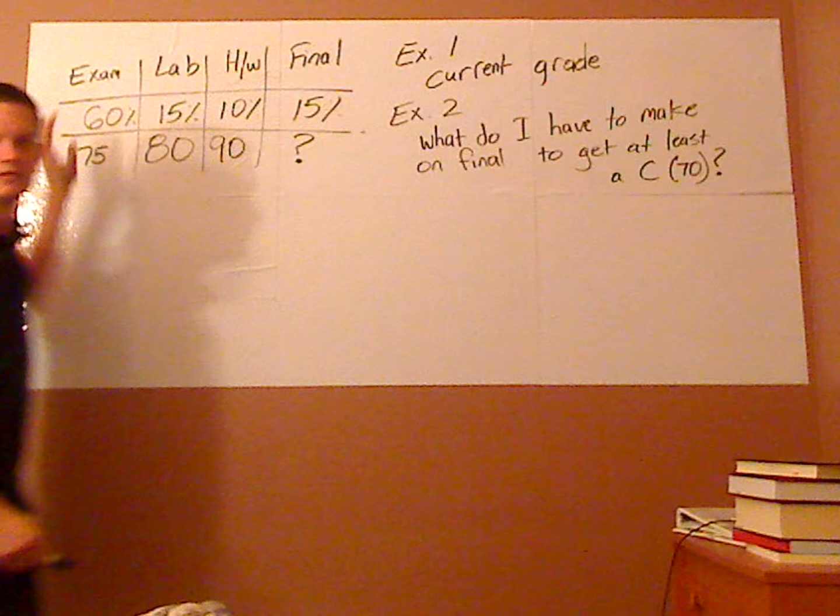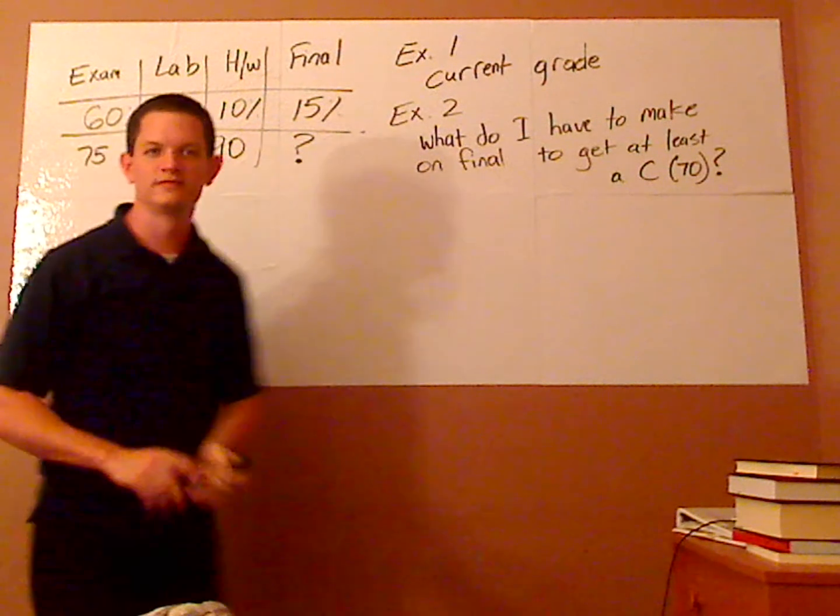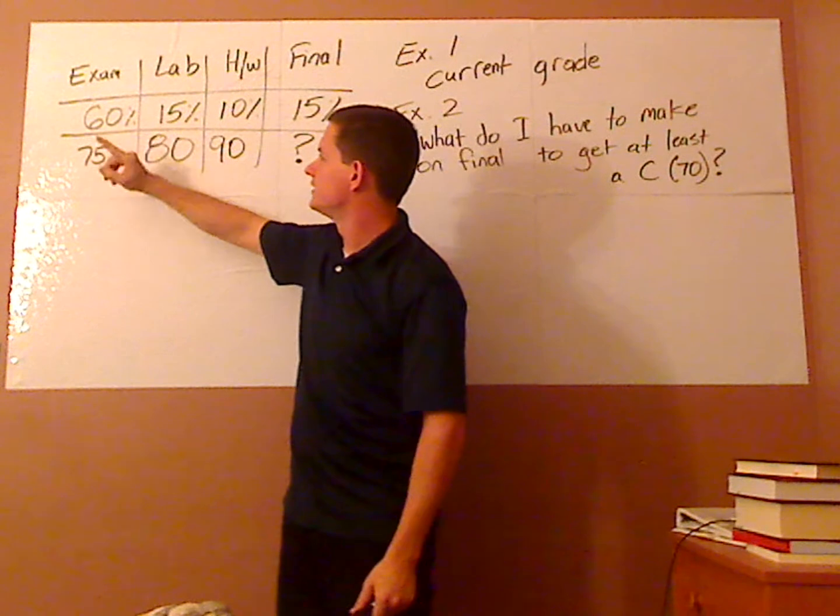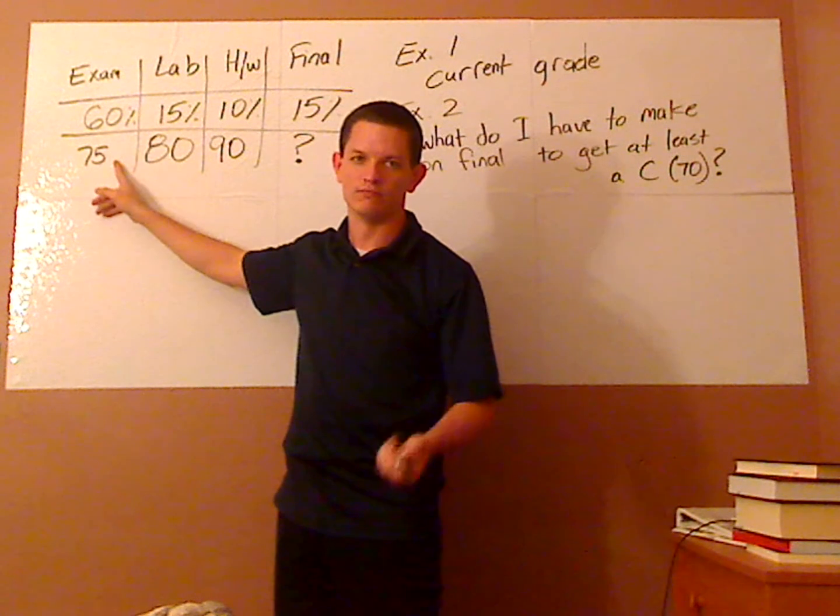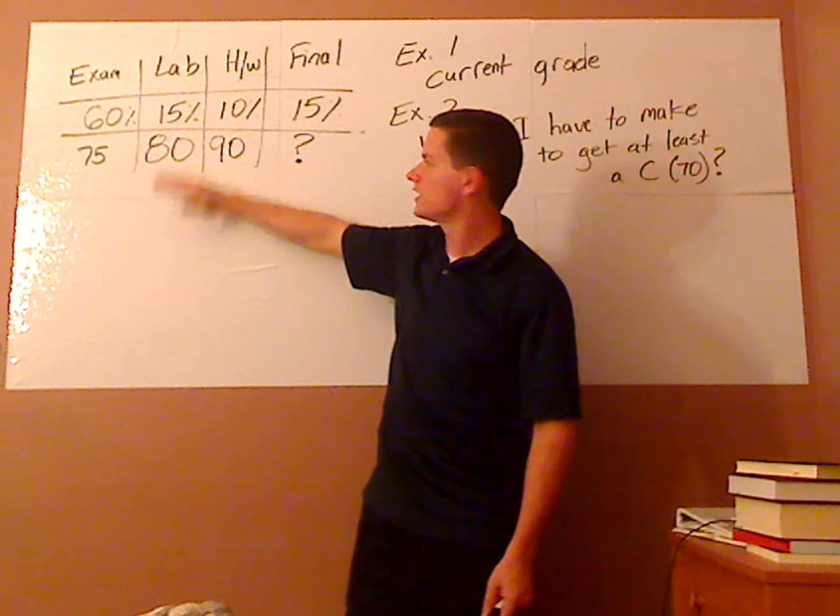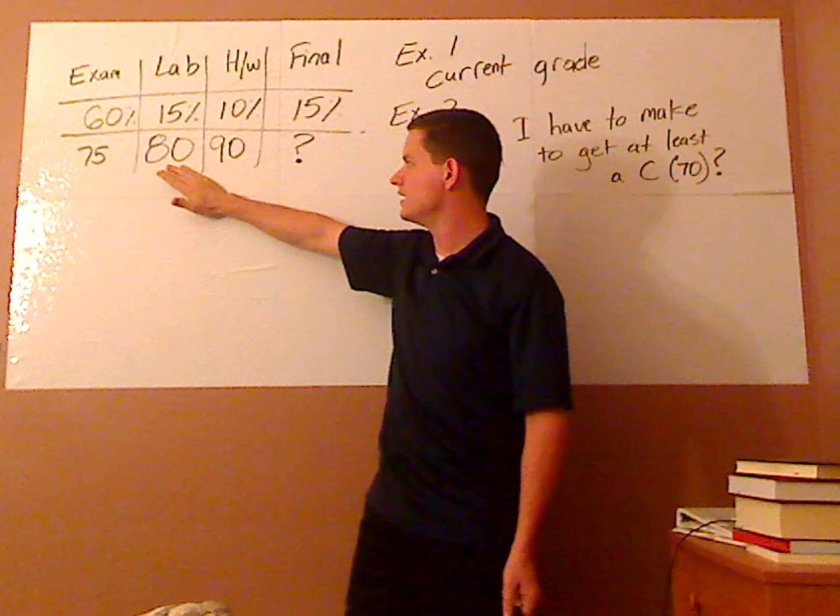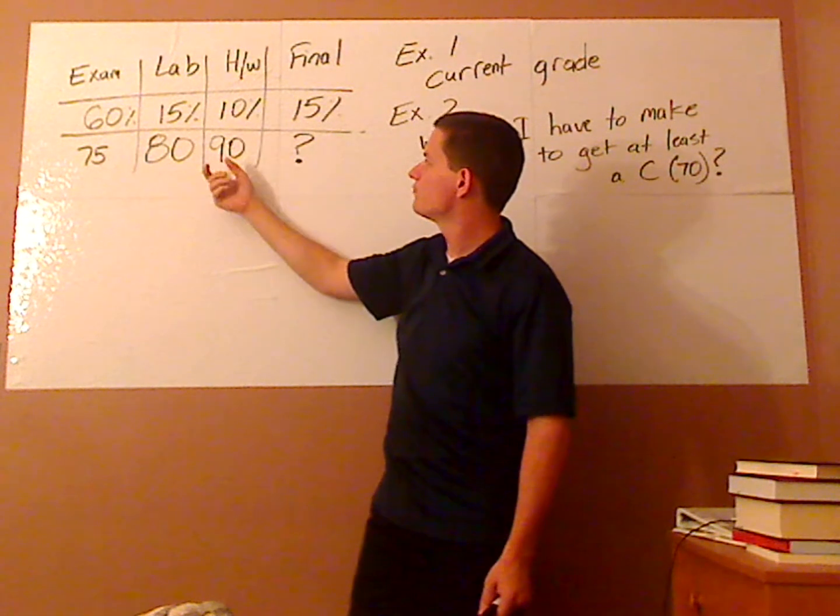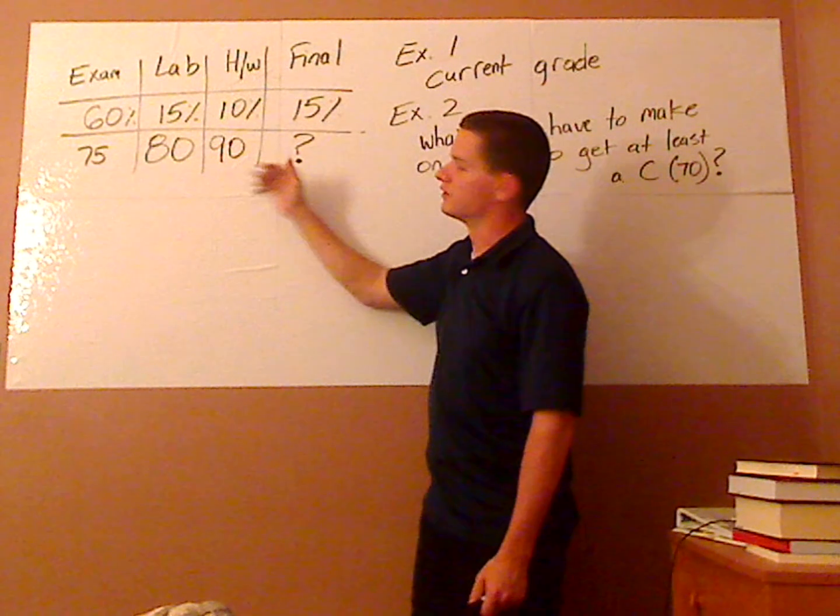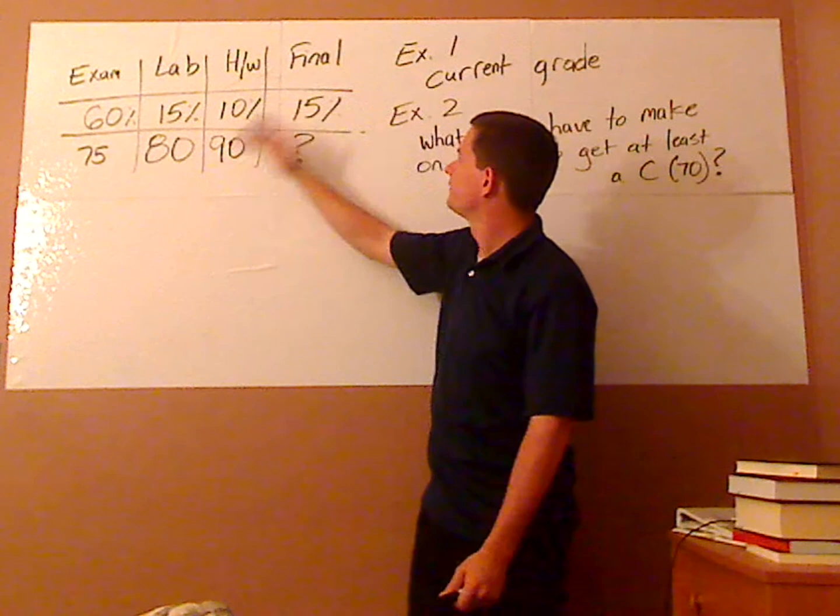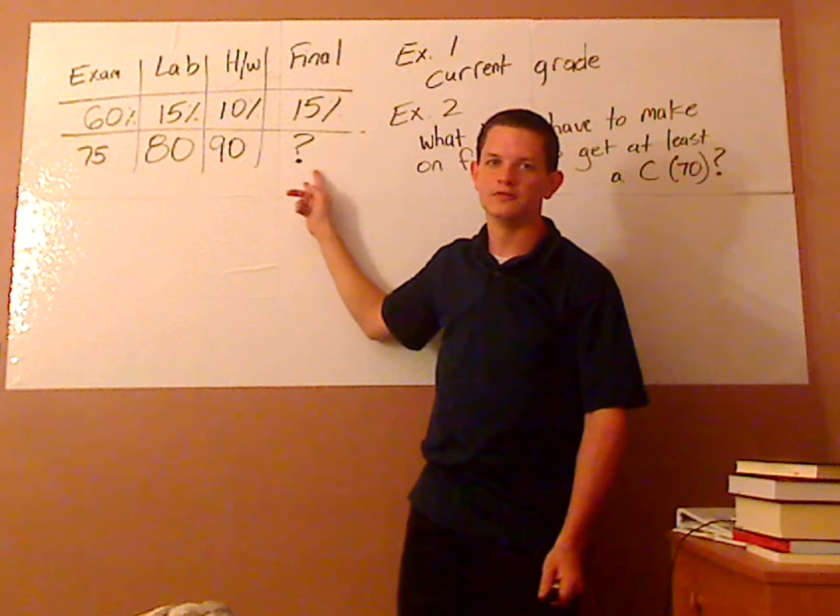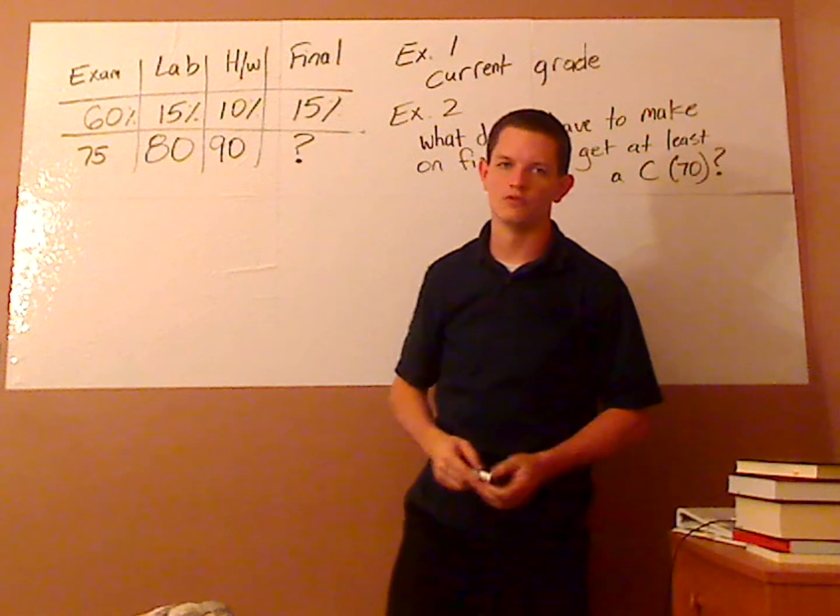So, you have your exam grade, and that's weighted at 60%, and your exam grade is 75%. Your lab is weighted at 15%, and your lab grade is 80%. Your homework is 10%, and you get 90%, because for the most part you've been doing your homework. And then for the final, it's worth 15%, and you have no clue what your final is.